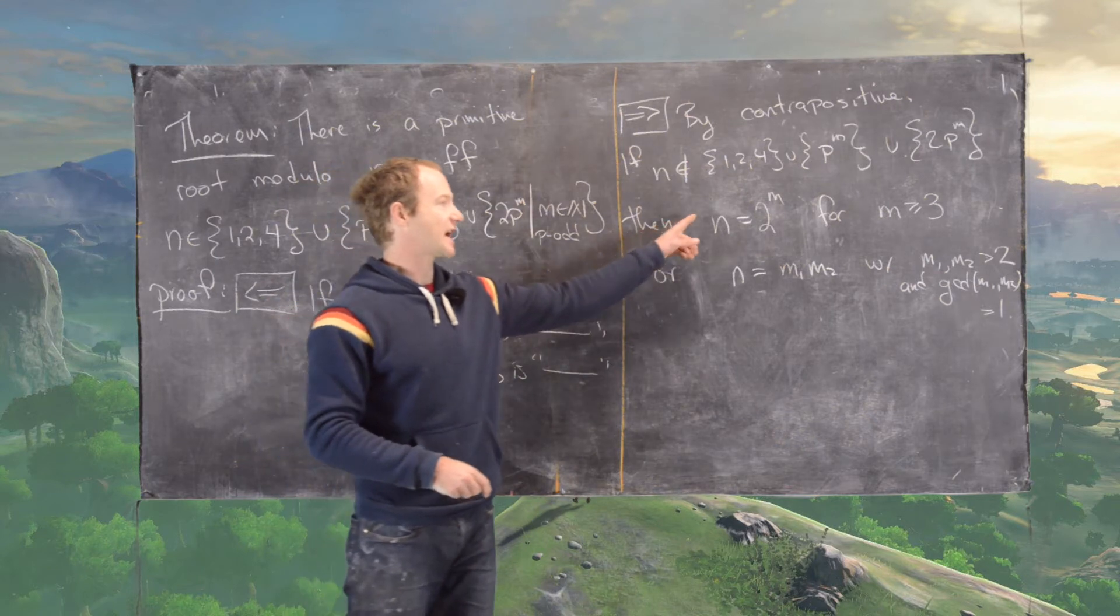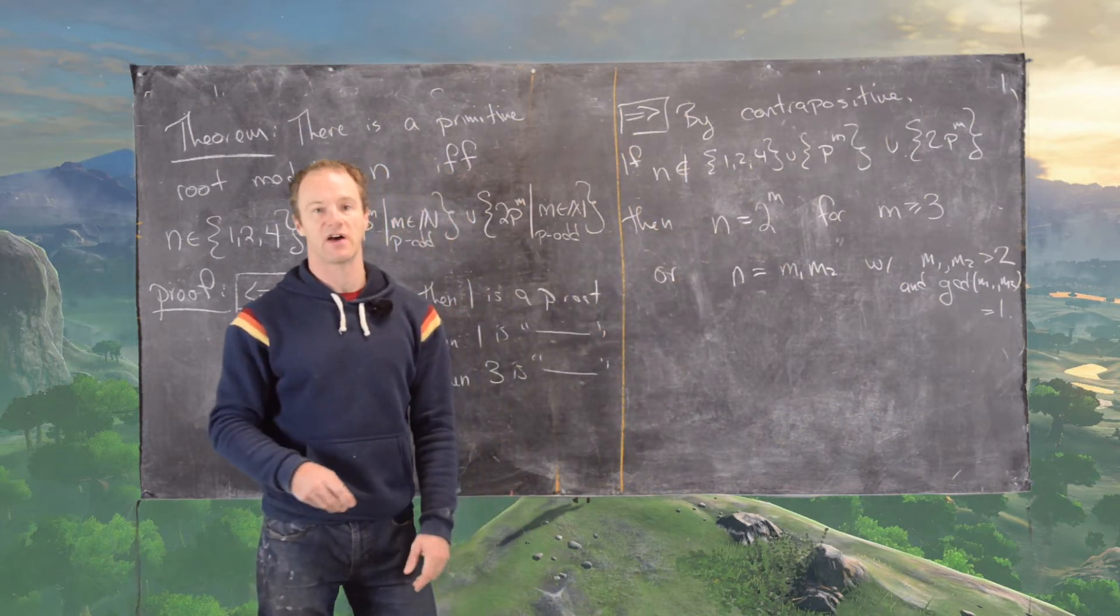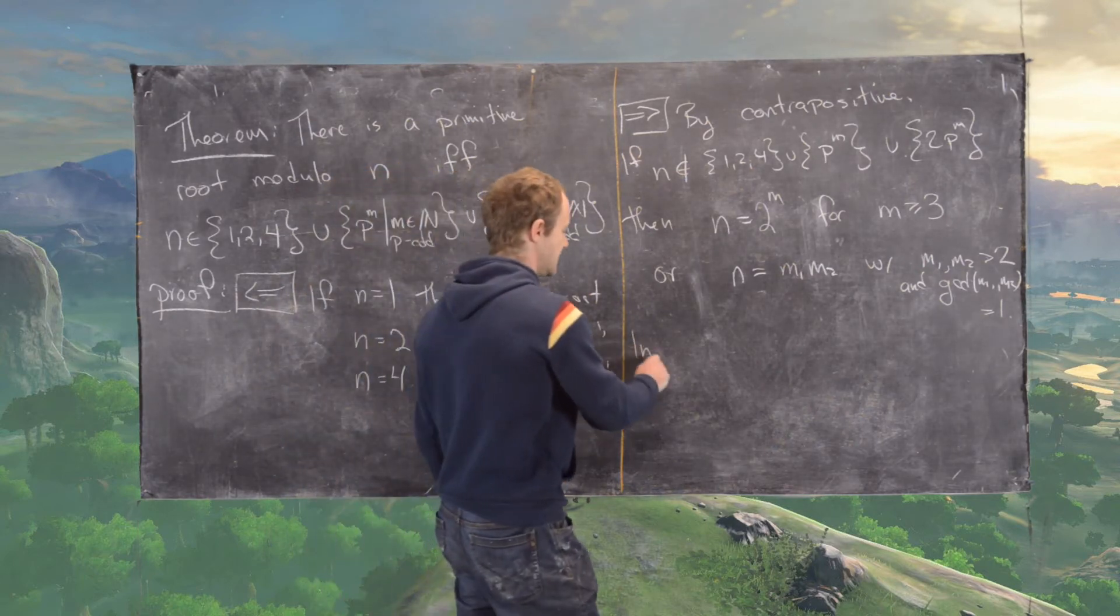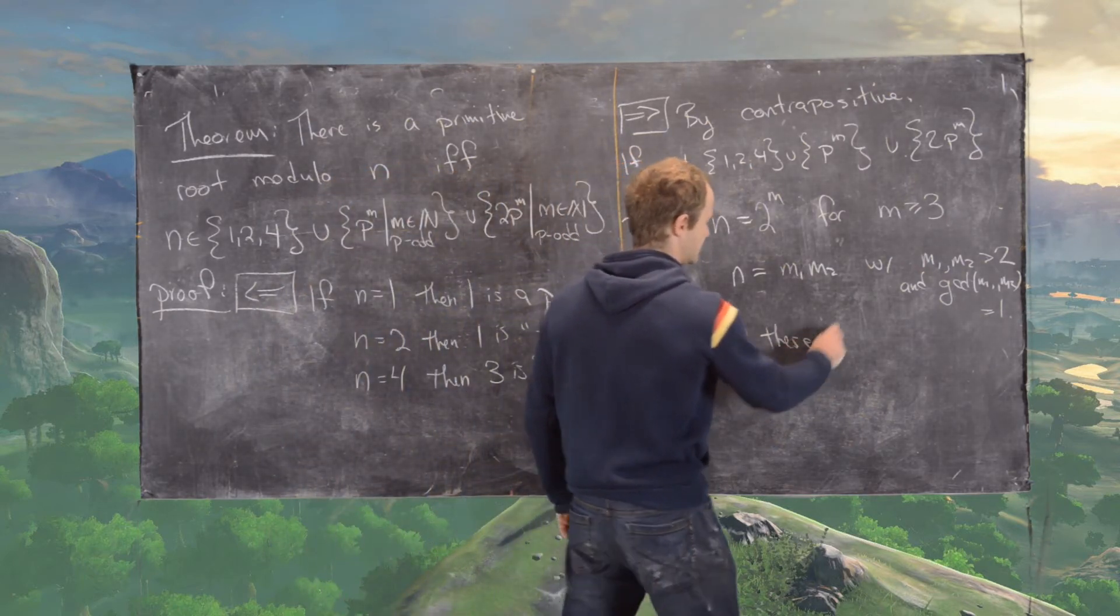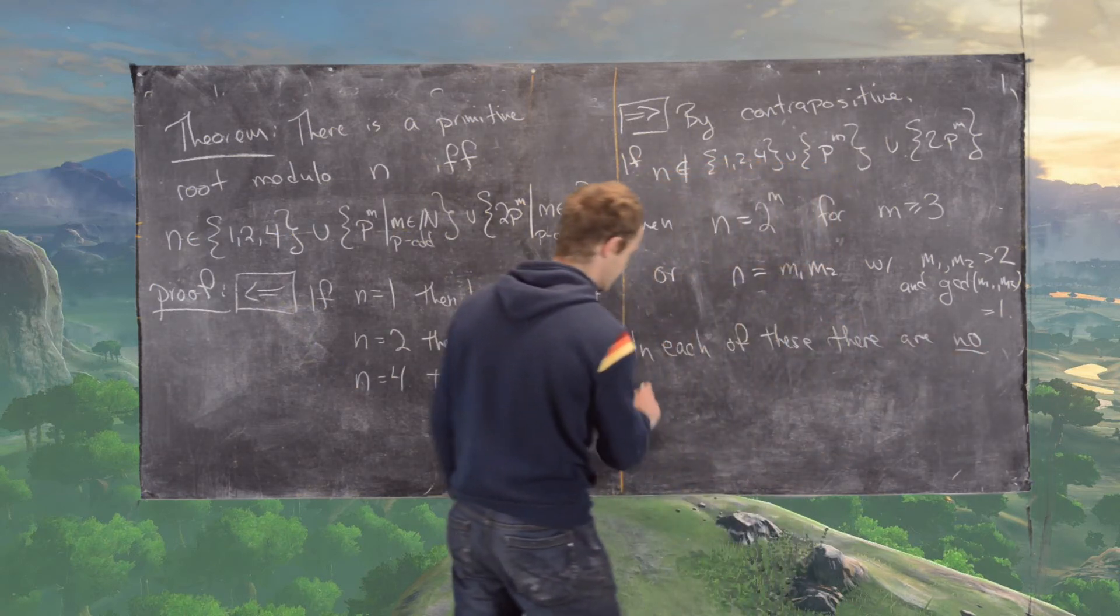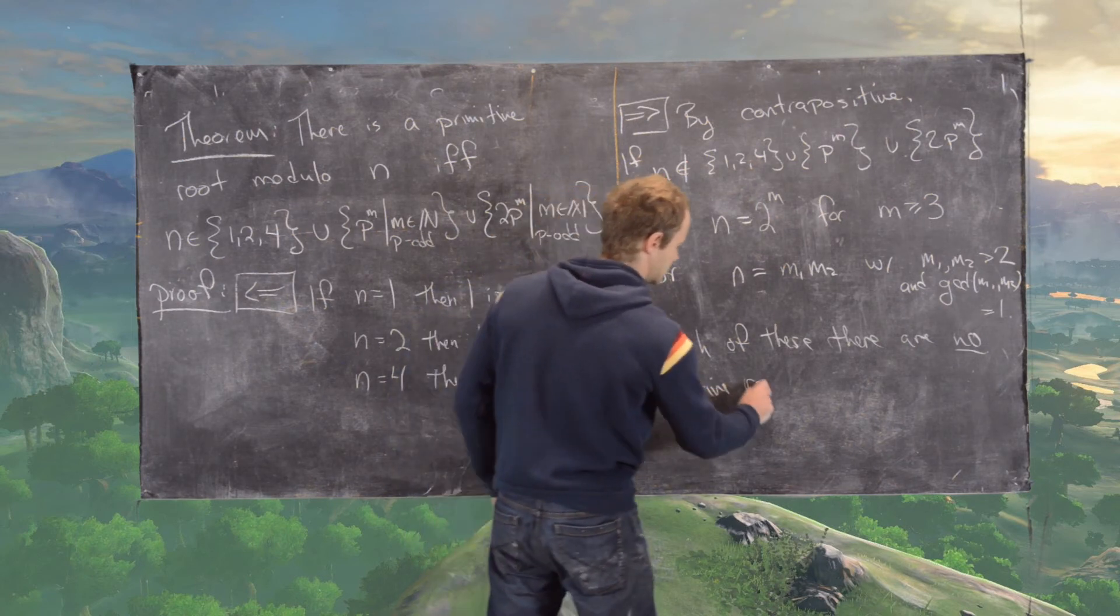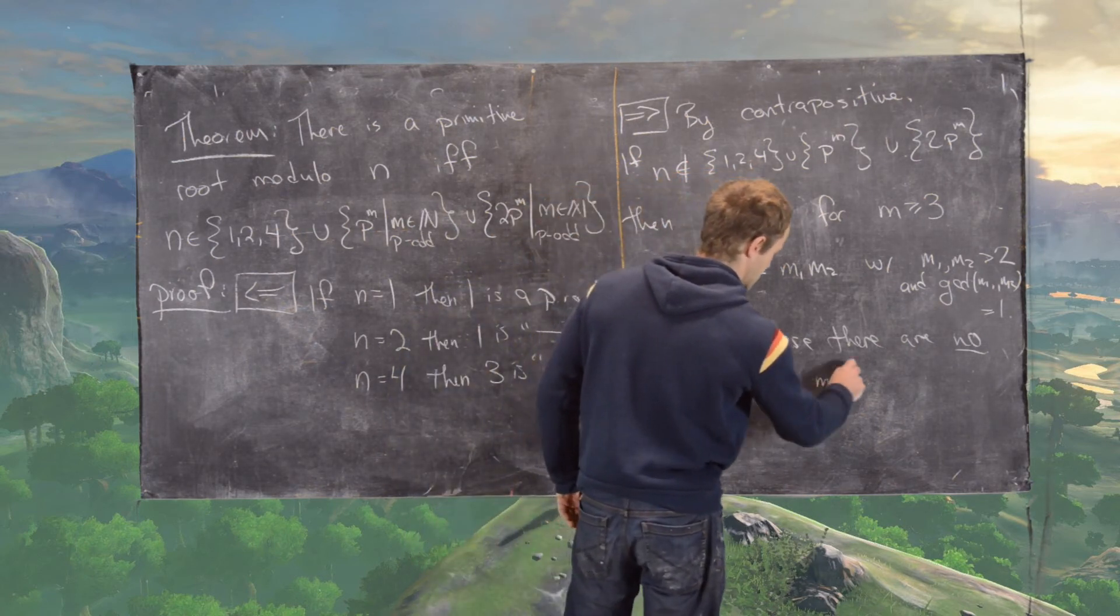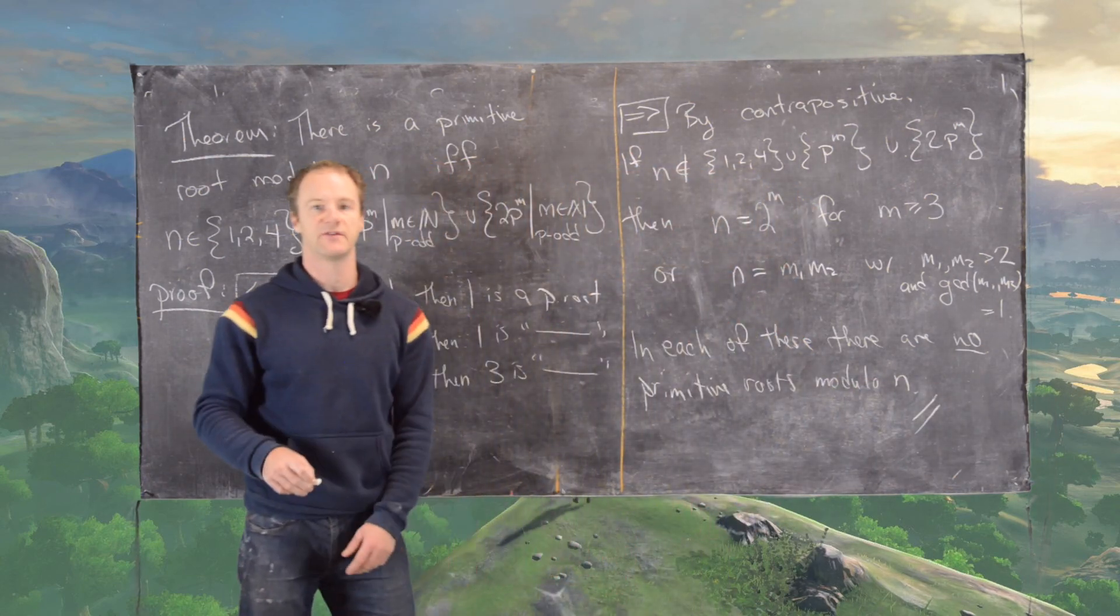And we've checked again in previous videos that each of these cases do not have primitive roots. And so in each of these there are no primitive roots modulo n. And that finishes the proof.